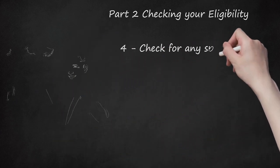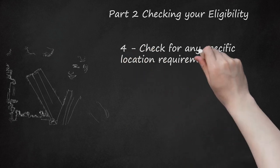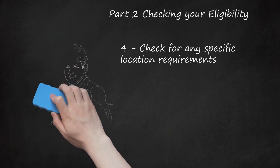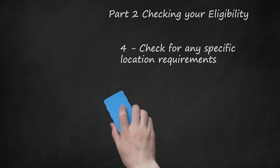Step 4: Check for any specific location requirements. Some grants will be open to organizations or individuals that live and operate anywhere. Others will be specific to rural areas, inner city, or some other location. Read the details carefully of any grant that interests you to ensure that you are in the right location. If you do not currently operate in the area included in a particular grant, but you could perform the work or service that is requested, then be sure to make it clear in your application that you are able to move.